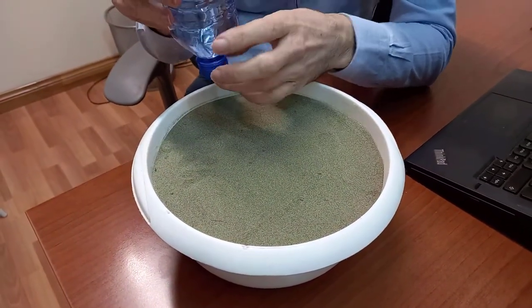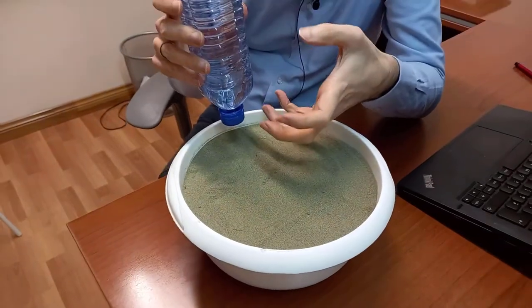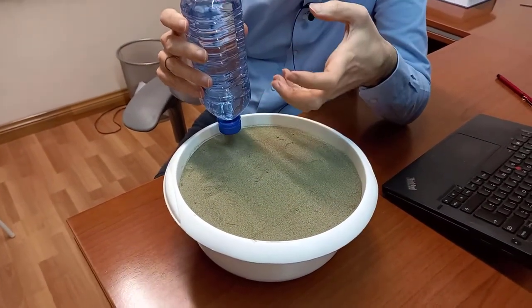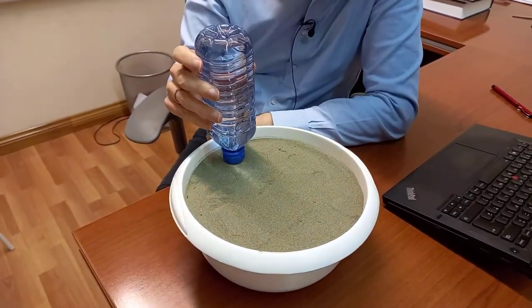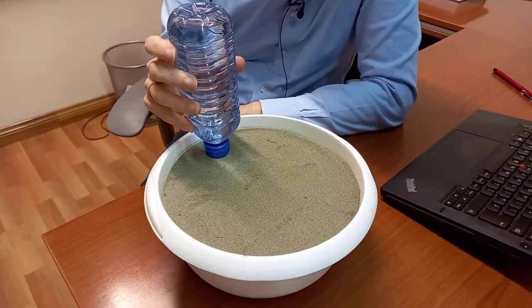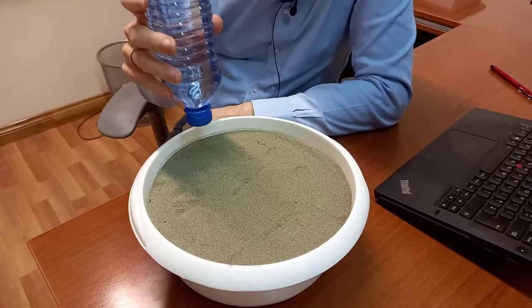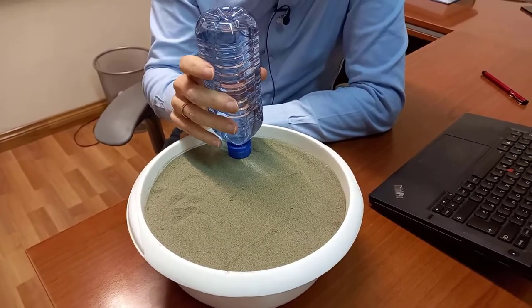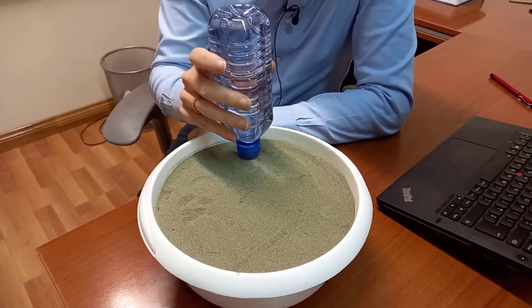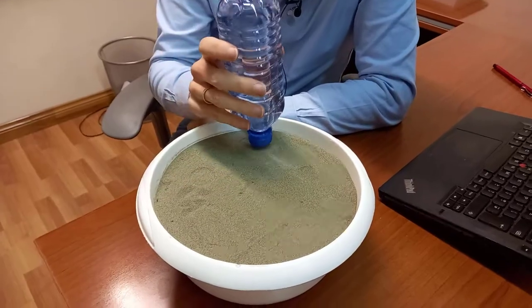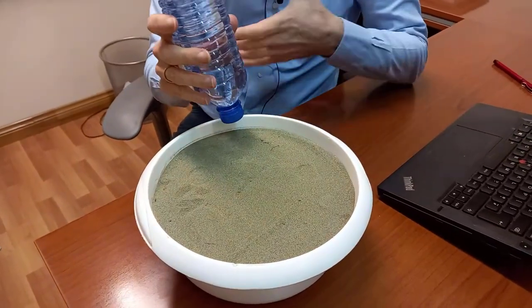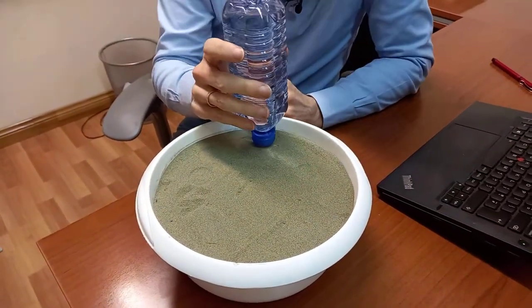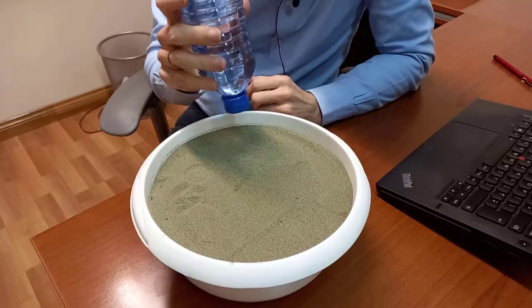The additional load on the foundation causes higher stress, higher effective stress in the sand that causes a little bit of compression and that results in the settlement. Now in a sand, the settlement happens almost immediately whether the sand is dry or saturated because it has high permeability. Any water in the voids can escape and allow the soil to compress.